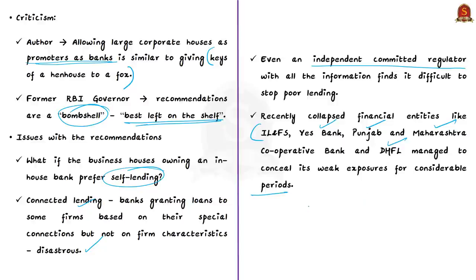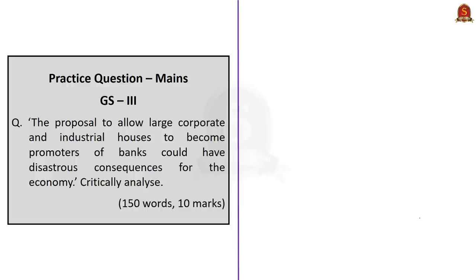We also have the classic example of Kingfisher Airlines, which took more than 6,000 crores of loans from a consortium of 17 lenders. When banks give loans to non-connected entities, there are many loan defaults already — so imagine what happens if they do self-lending. This is the reason why there are many criticisms for allowing large corporate houses as promoters of banks. Let us hope that these public debates and discussions will enable the government to take a conscious call and build a better banking sector.